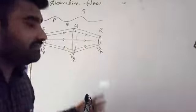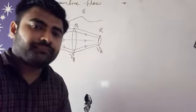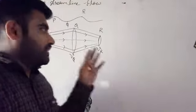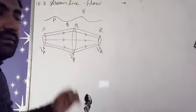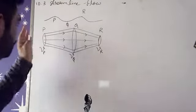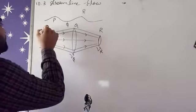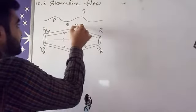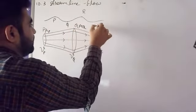So according to the area, whatever molecules are flowing forward will change their speed according to the area. But if we talk about area, all three areas are different - like here Ap, here Aq, and here the cross-sectional areas are different.